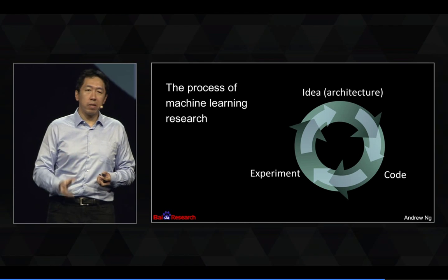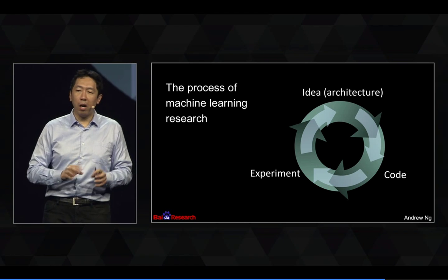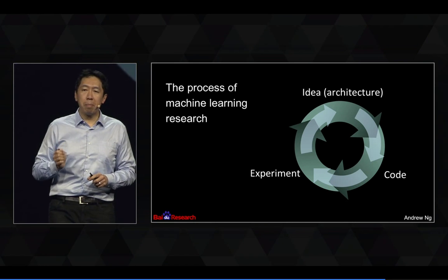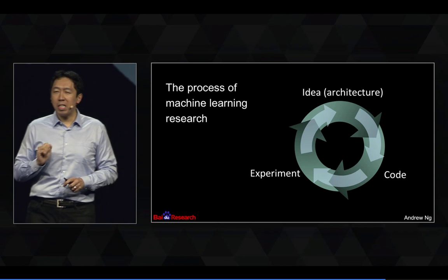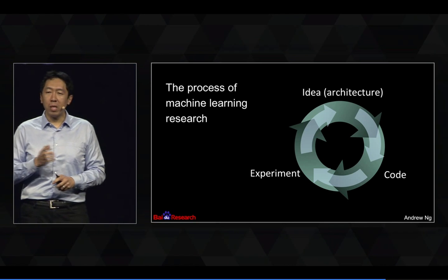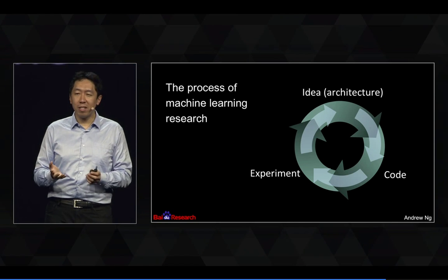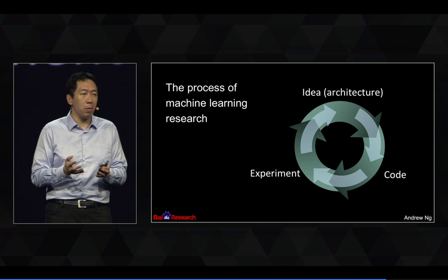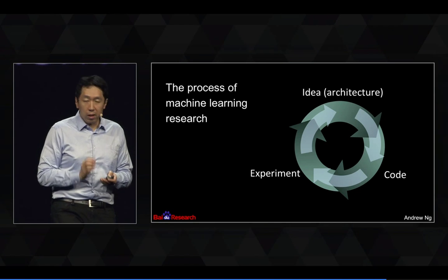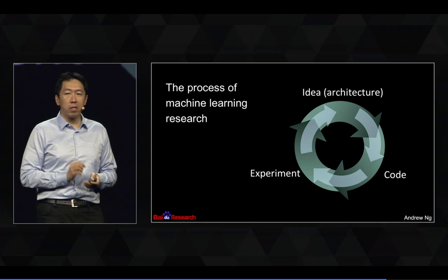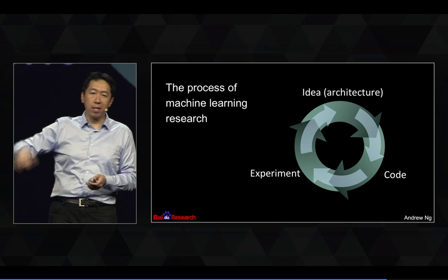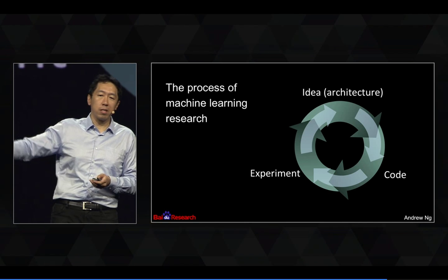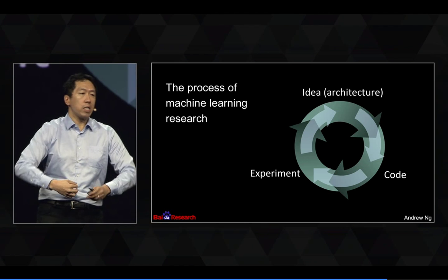A large fraction of machine learning research today is very empirical, meaning that we don't really know in advance what's going to work. The only way to know, sometimes, is to try it out. So a lot of machine learning research today is just driven by how fast you can go around this cycle — and the faster you can go around the cycle, the faster you can make progress.